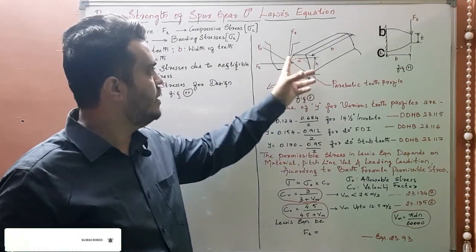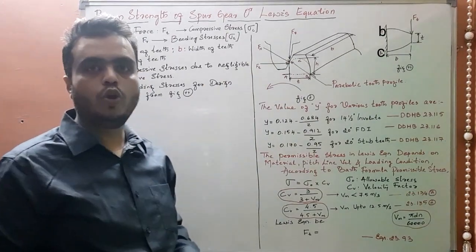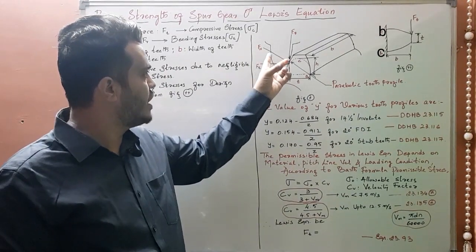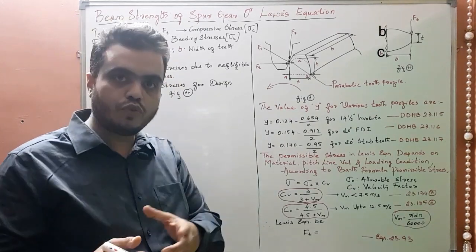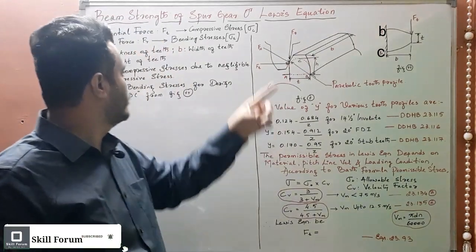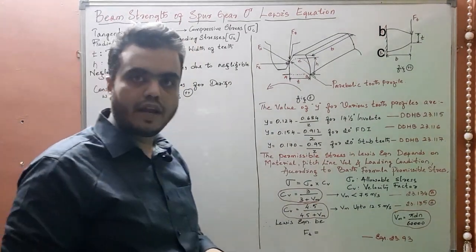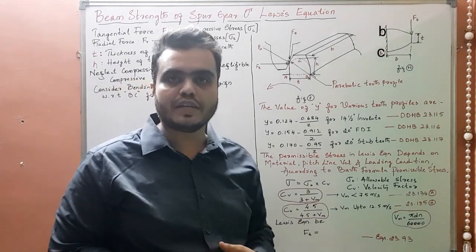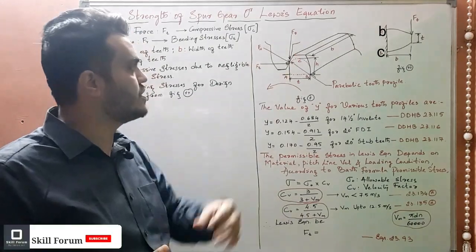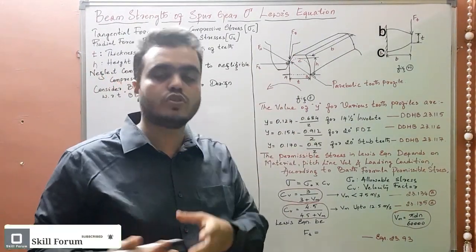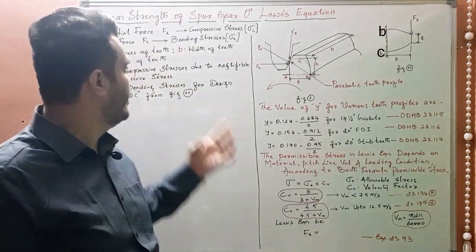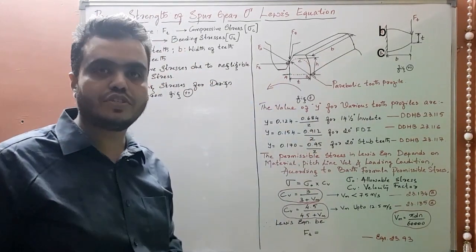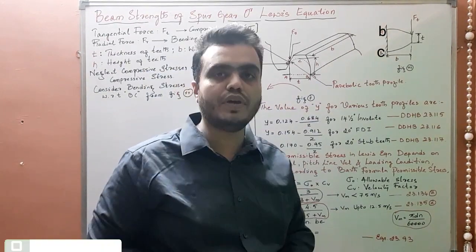Here we have a gear tooth. The normal load applied on the gear tooth produces two force components: Fr, which is the radial force that develops compressive stresses, and Ft, which is the tangential load that develops bending stress. Since the compressive stresses developed due to the radial force are negligible, Lewis neglected them. Therefore we need to consider only the tangential load, which gives the bending strength of a spur gear.